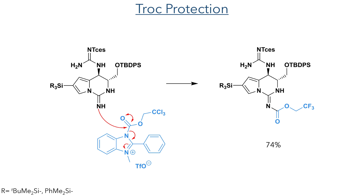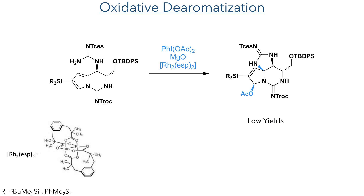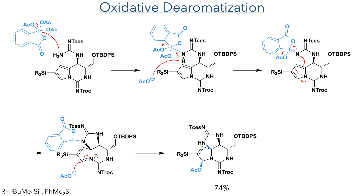The more nucleophilic guanidine group, present in the six-membered ring, was then protected using Troc-benzimidazolium triflate. With all of the protecting groups now in place, the key oxidative de-aromatisation reaction was attempted. The initial attempts used diacetoxy iodobenzene and a rhodium carboxylate catalyst in a reaction very similar to the one used in the total synthesis of hapalindole A. However, the authors found that higher yields were obtained by omitting the rhodium catalyst and instead using Dess-Martin periodinane.